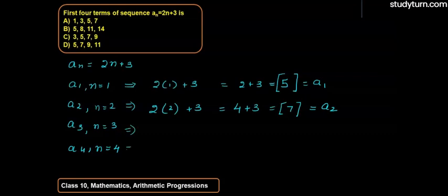Similarly, for the third term, if we put here n equals to 3, it will be 2 multiplied by 3 plus 3, that is 6 plus 3, that is 9. This will be our third term.